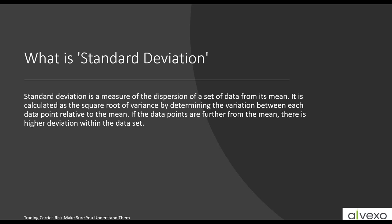Standard deviation is a measure of the dispersion of a set of data from its mean. If we replace 'mean' with 'moving average,' standard deviation becomes a measure of the variation between the opens, highs, lows, and closes from the moving average. It is calculated as the square root of variance, by determining the variation between each data point relative to the mean — so it's the variation between the open and the moving average, the close and the moving average, the high and low in that time segment.